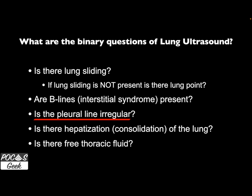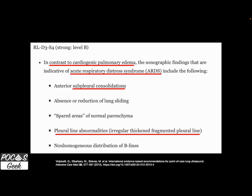Today we're going to reflect back to our binary questions on lung ultrasound. We've already covered lung sliding and B-lines in previous videos — links are in the description below. What we want to talk about today is whether the pleural line is irregular. The most common cause, with common things being common, is going to be infection.